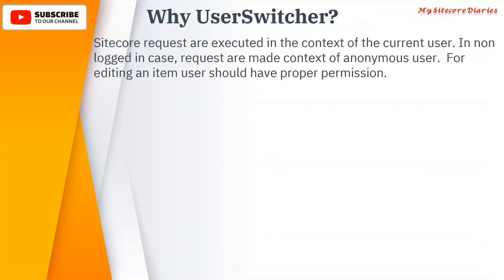For editing an item, a user should have the proper permission — without the permission, the user cannot edit it. There are two problems: one is the user's permission, or maybe the user itself. So there are two options: whether you switch the user using another user — that is called the user switcher — or you just disable the security — that is called the security disabler.